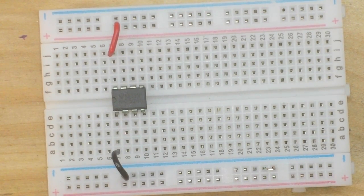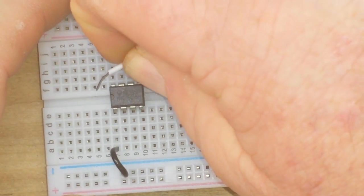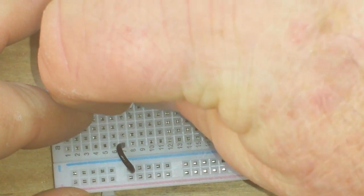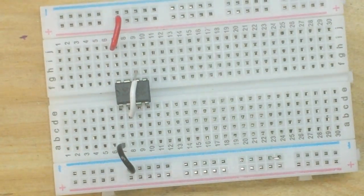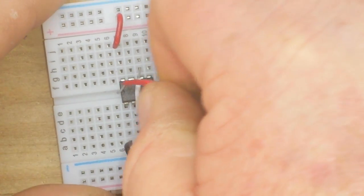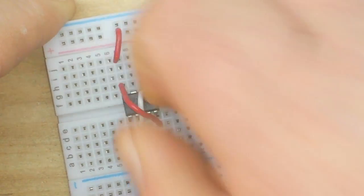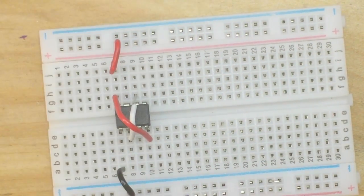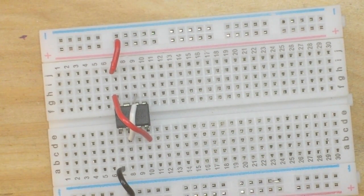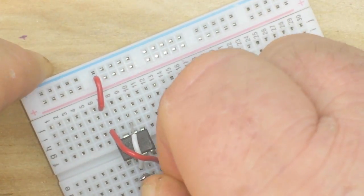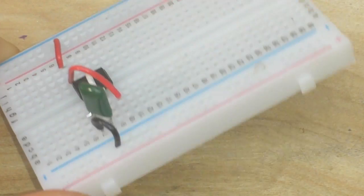Now for the magic. Pin 6, threshold goes to pin 2, the trigger. Like that. Pin 4, our reset needs to be high. So we connect pin 4 to pin 8. Like that. Now we need our timing capacitor. That goes between the trigger and ground. So we connect it between pins 1 and 2.